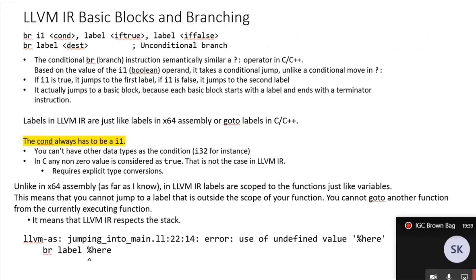We need to see how we can achieve branching among different basic blocks using the conditional branch instruction. It works kind of like the ternary operator in C++. Based on the value of the boolean operand, it takes a conditional jump. If the i1 is true, it jumps to the first label; if the i1 is false, it jumps to the second label. It actually jumps to a basic block, because each basic block starts with a label and ends with a terminator instruction. The condition always has to be of type i1.